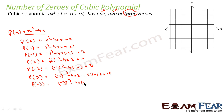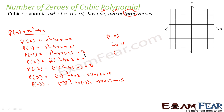So we have these points: (0, 0), (1, -3), (-1, 3), (2, 0), (-2, 0), (3, 15), and (-3, -15). Let's plot these points.